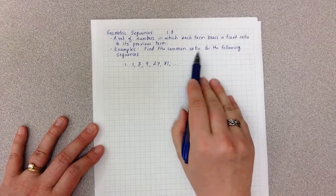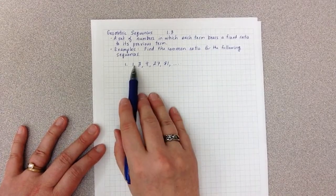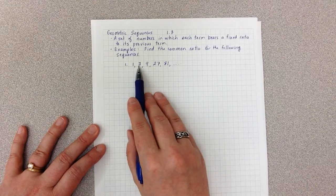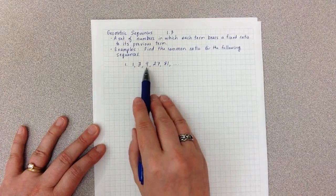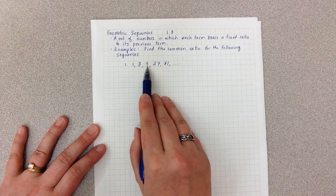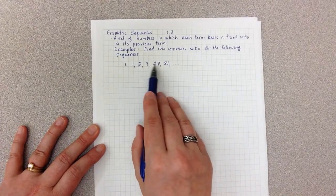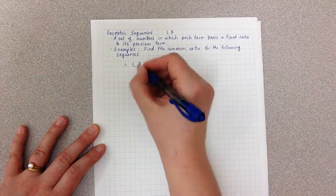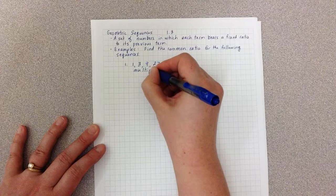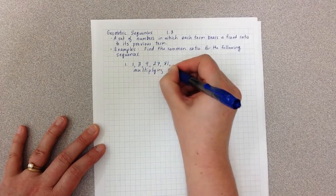This idea of ratio basically comes down to what am I multiplying each time? What did I multiply 1 by to get to 3? What did I multiply 3 by to get to 9? What did I multiply 9 by to get to 27? And in this case we are multiplying by 3.